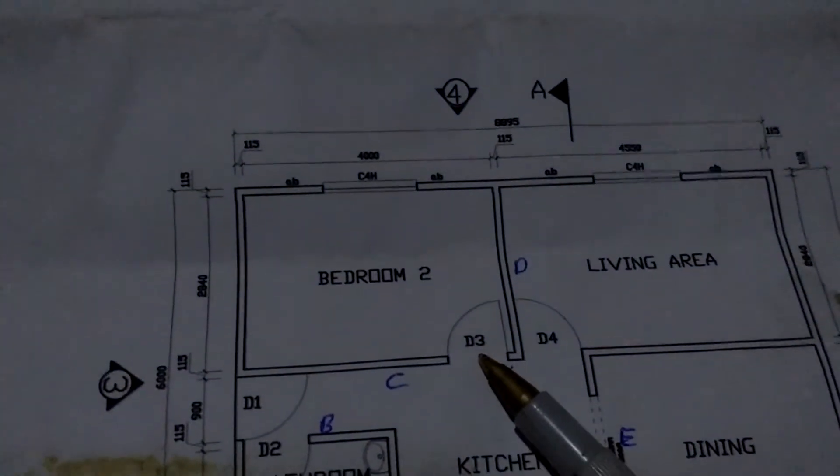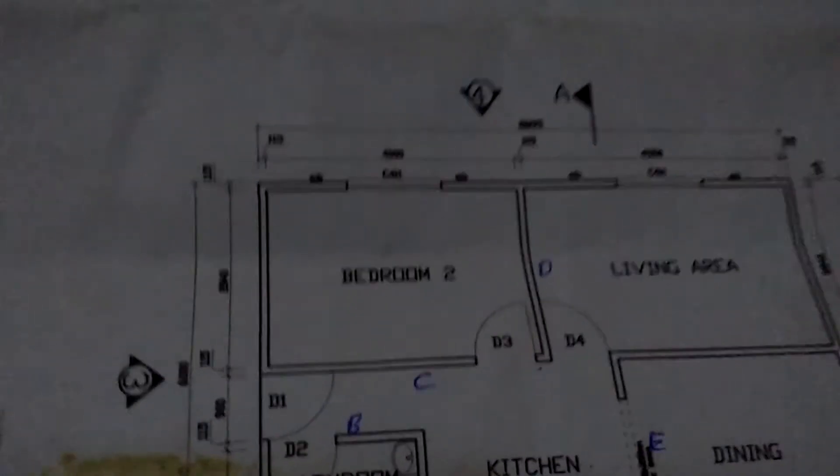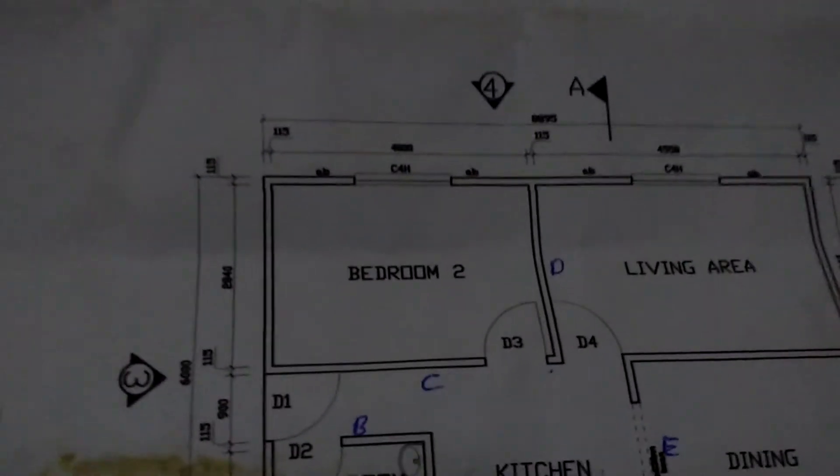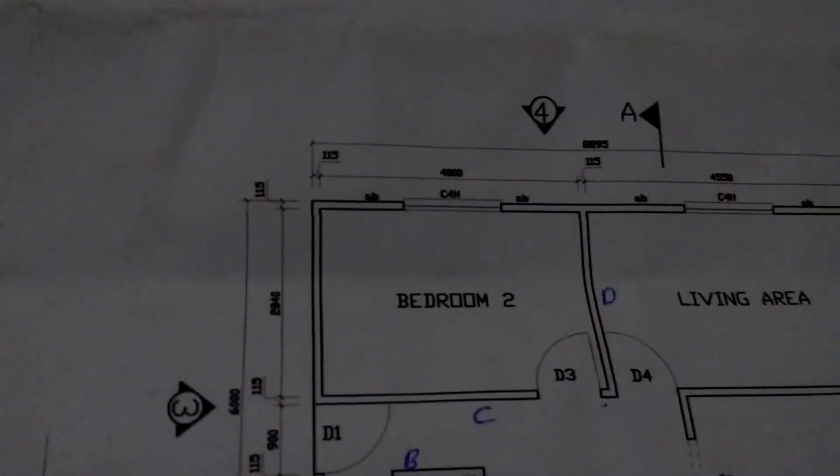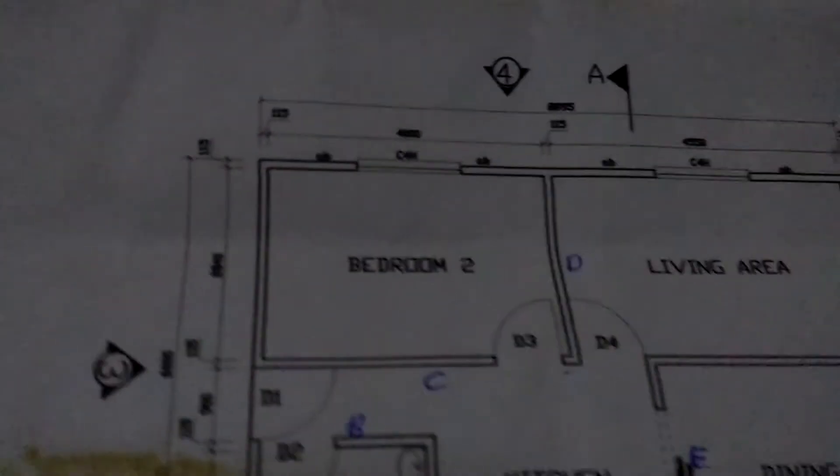So never mind the openings here. We're going to adjust them. We're going to make adjustments for openings. And then wall C, wall D, this is our measurement here. That will be 2,840.